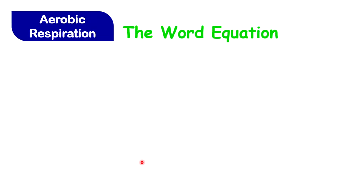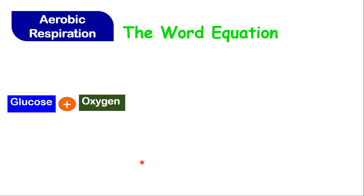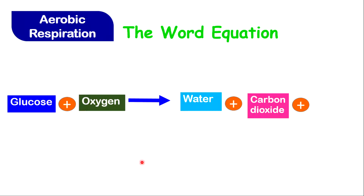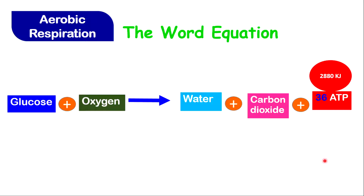The word equation for aerobic respiration is that glucose reacts with oxygen to produce water, carbon dioxide, and energy in the form of ATP. A point to note is that from one glucose molecule, you get 36 molecules of ATP, which turns out to be an approximate value of 2,880 kilojoules of energy.